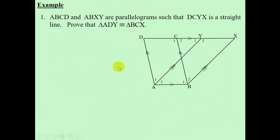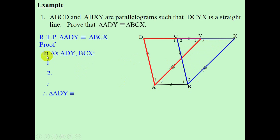Let's move on to some riders. Our first example: ABCD and ABXY are parallelograms such that DCYX is a straight line. We want to prove that triangle ADY is congruent to triangle BCX. In triangles ADY and BCX, let's look for sides that are equal. AD is equal to BC, and the reason is opposite sides of a parallelogram are equal.